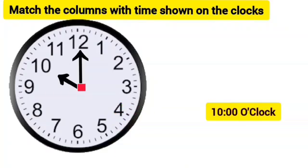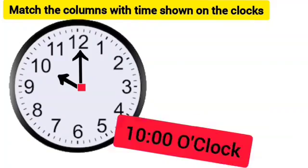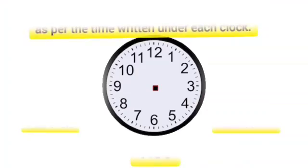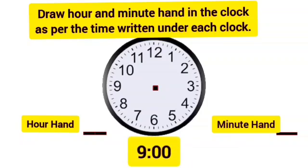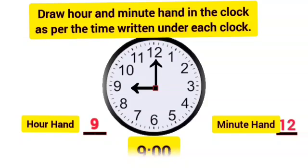In the next question, we will draw the hour and minute hand in the clock as per the time written under each clock. In the first clock, the time is given as 7 o'clock, so the hour hand will be on 7 and the minute hand will be on 12. In the next clock, the time is written 9 o'clock, so the hour hand will be on 9 and the minute hand will be on 12.